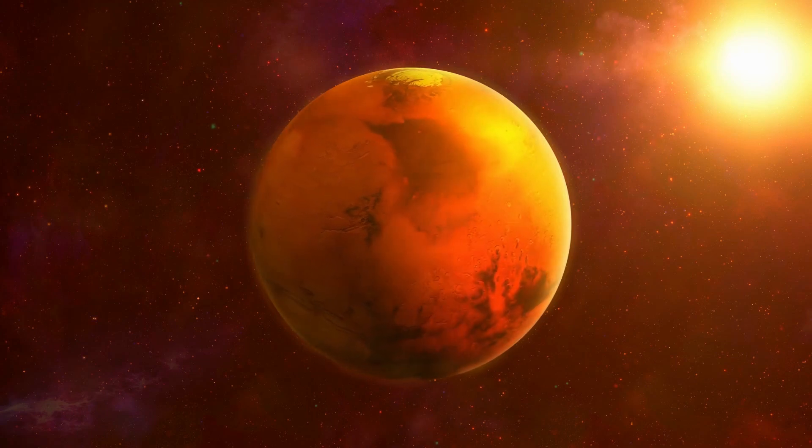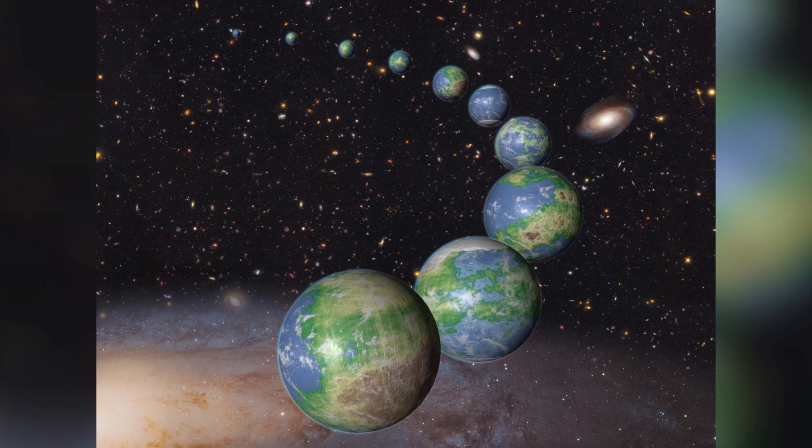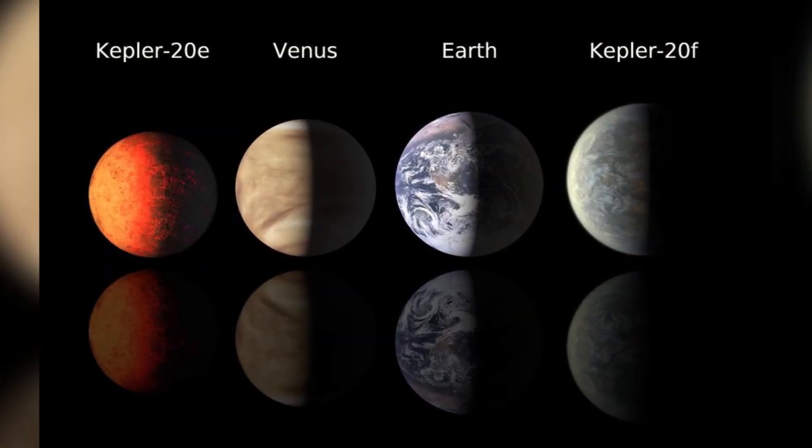Irrespective of the eventual result, this tells us that Earth-like planets don't have to circle a star like ours. There are many more possibilities.